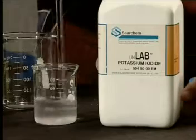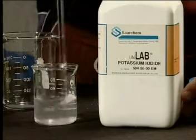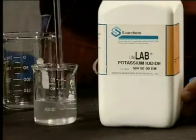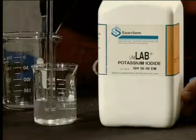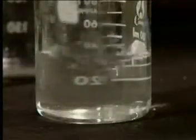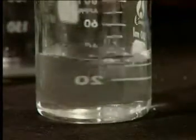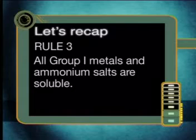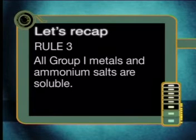Now we will make a solution of potassium iodide. Take a careful look at the solution — potassium iodide is a soluble salt, therefore it will dissolve completely. Remember, all group one metals and ammonium salts are soluble. Before we continue with this experiment, I would like to write down the ionic equations to show you the dissociation of these salts in water.